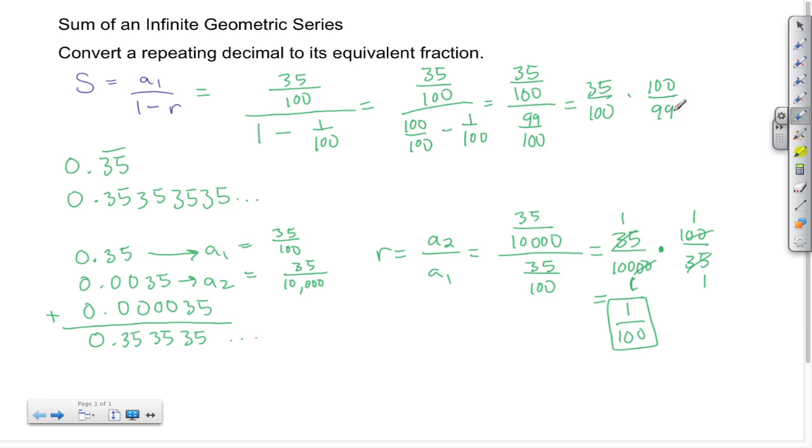...100 over 99. These hundreds cancel out—100 divided by 100 is 1—and then I end up with 35 over 99, and I can't do any more simplification there.